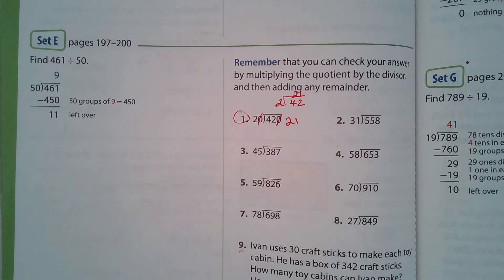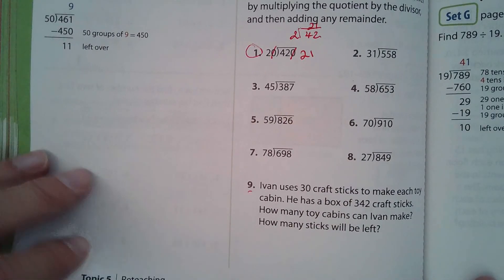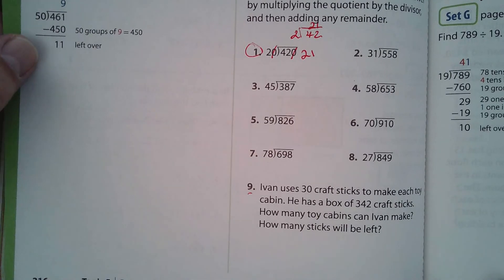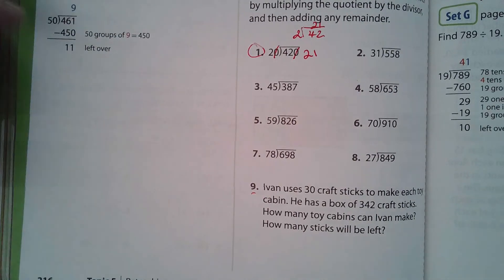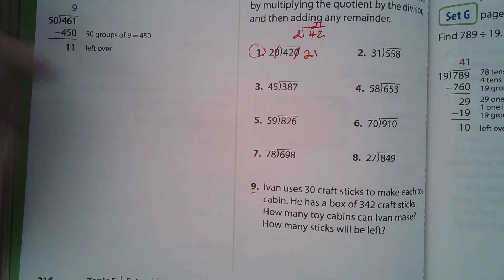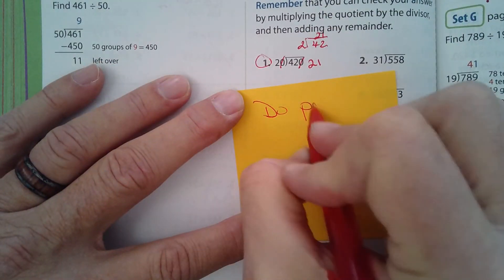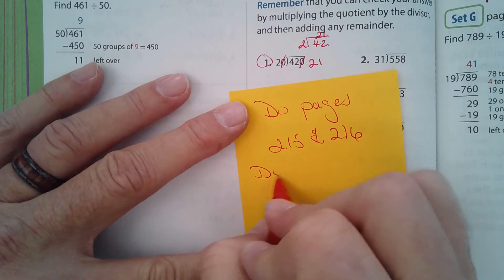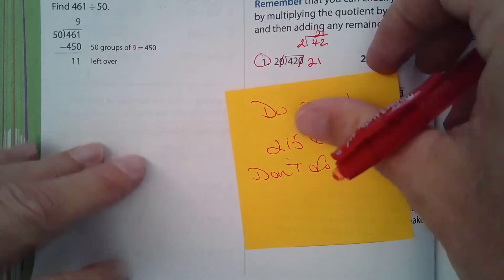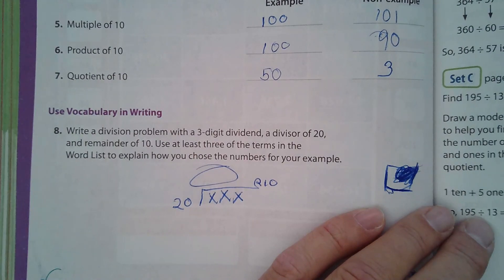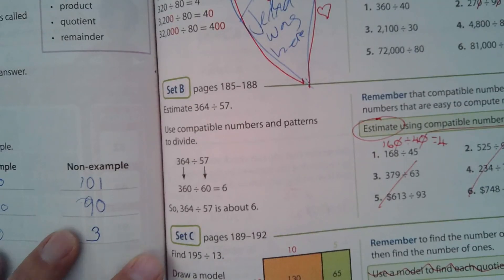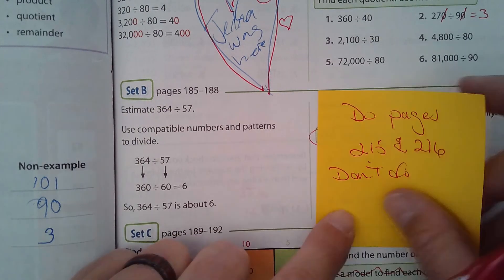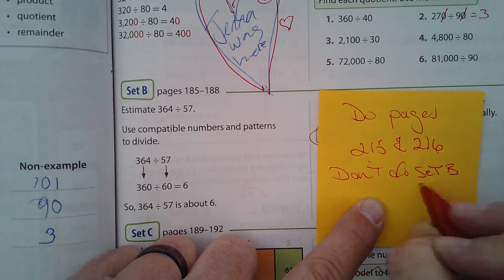And then yes, I want you to do number nine. Somebody asked me about that. So that's your homework for tonight or over the break. It's just pages 215 and 216. Do pages 215 and 216. Don't do set B, the estimating one. That's the one I was saying you don't have to do.